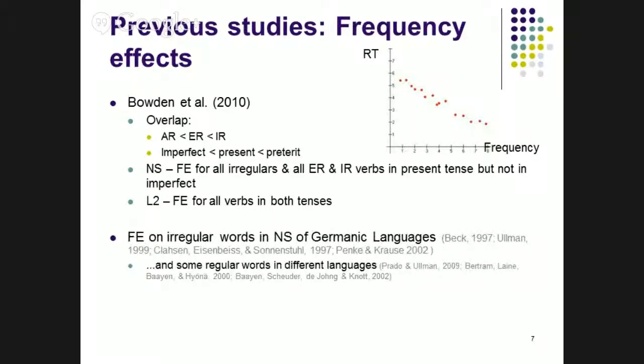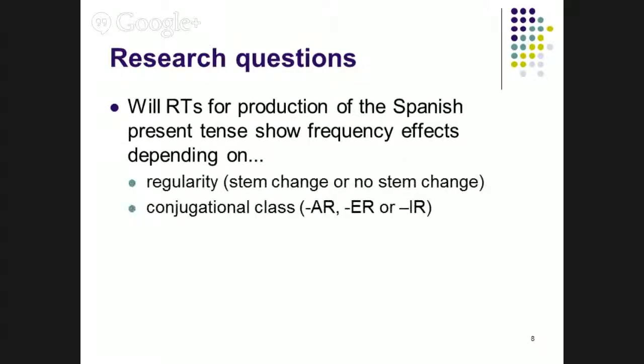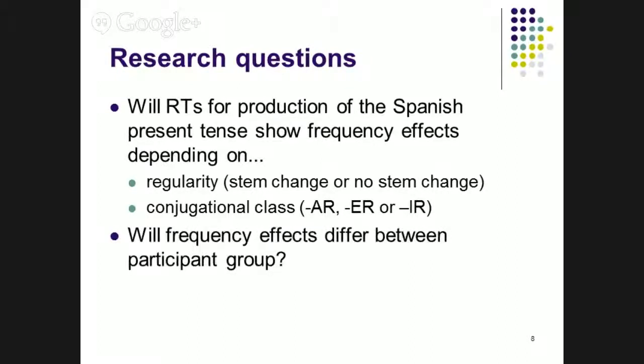Other studies have been a little more varied. A lot of them have found frequency effects on irregular words in native speakers of Germanic languages and on some regular words in different languages. Latonen and Lane did a study on Swedish native speakers learning Finnish. They actually found no frequency effects at any range of frequency for L2 speakers. They say because the L2 speakers didn't have sufficient exposure to the language to develop storage of any particular forms. An idea that we will return to in the discussion. So what are my research questions? Will reaction times for the production of the Spanish present tense and preterite tense show frequency effects depending on regularity and conjugational class. And how will the frequency effects differ between native speakers, L2 speakers, and heritage speakers?